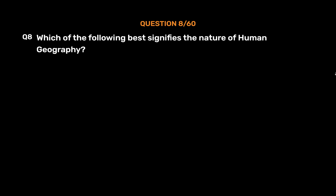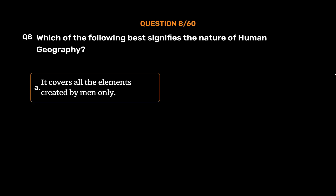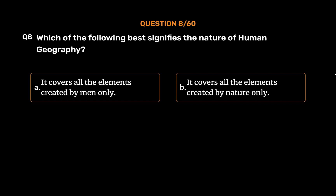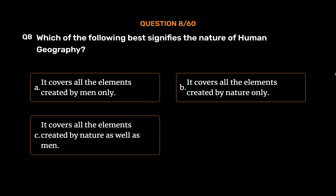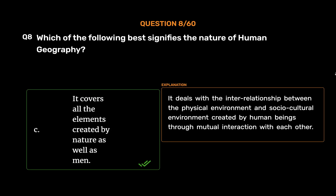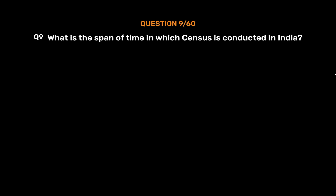Question number 8: Which of the following best signifies the nature of human geography? Option A: it covers all elements created by men only, option B: it covers all elements created by nature only, option C: it covers all elements created by nature as well as men, option D: none of the above. The correct answer is option C. It covers all elements created by nature as well as men, dealing with the interrelationship between the physical environment and the socio-cultural environment created by human beings through mutual interaction.